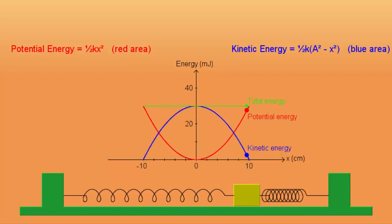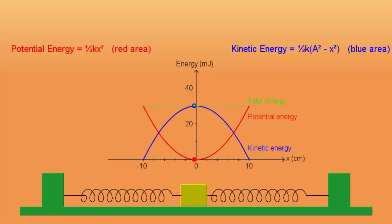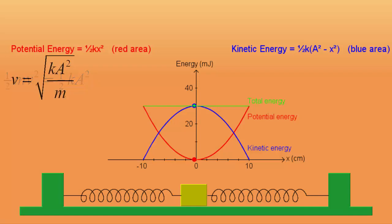The maximum speed occurs when the block is at equilibrium. This is when all of the energy is kinetic, so the kinetic energy is equal to the total energy. The total energy is the potential energy at the amplitude, and the kinetic energy is equal to half mV squared. This equation can be rearranged to solve for the maximum velocity at equilibrium. Given that the block has a mass of 500 g and the spring constant is 6 N per m, what is the maximum velocity of the block?